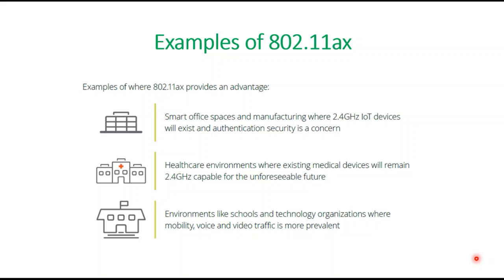Some examples of Wi-Fi 6 use cases: smart office spaces and manufacturing where 2.4 GHz IoT devices exist and authentication security is a concern; healthcare environments where existing medical devices remain 2.4 GHz capable for the foreseeable future; and environments like schools and technology organizations where mobility, voice, and video traffic are prevalent — all can benefit from Wi-Fi 6.